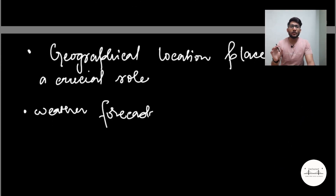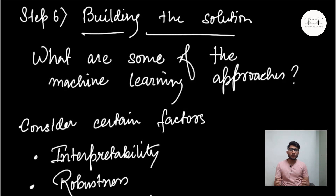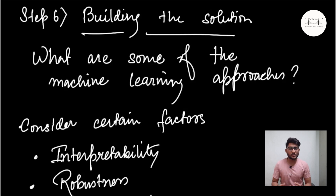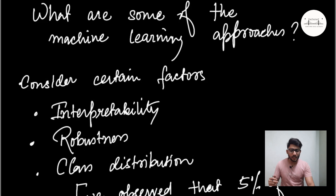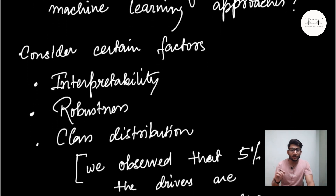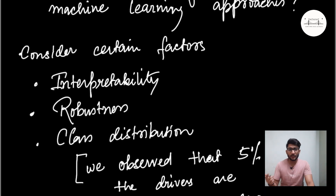Now that you have established the initial driving factors and understand your data, it's time to propose the solution. When building the machine learning solution, consider what kind of problem we have. We already set the context as a classification problem — specifically a binary classification problem — because we are determining whether the driver is likely to churn or not as a probability, then further classifying as ones and zeros. The focus should be on interpretability, because we want to determine the factors leading to churn. We cannot directly use a deep learning model where interpretability is very difficult.